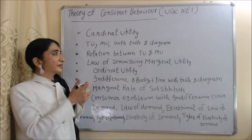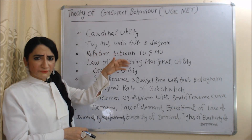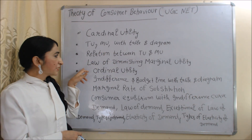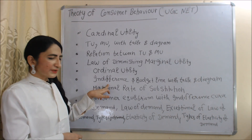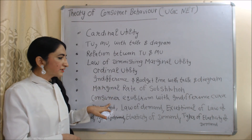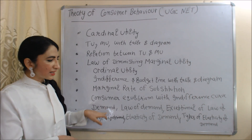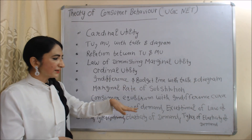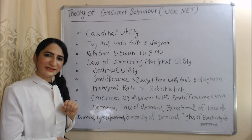Today we are going to talk about theory of consumer behavior for UGC NET. In today's video we will cover topics: cardinal utility, total utility, marginal utility with table and diagram, relation between total utility and marginal utility, law of diminishing marginal utility, ordinal utility, indifference curve, budget line with table and diagram, marginal rate of substitution, consumer equilibrium with indifference curve, demand, law of demand, exceptions of law of demand, types of demand, elasticity of demand, and types of elasticity of demand. So let's start.